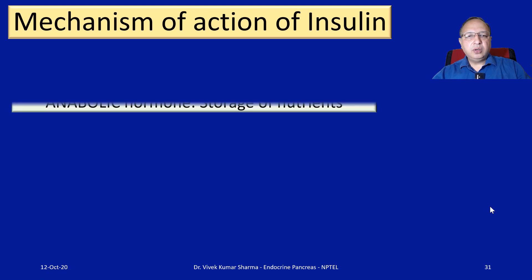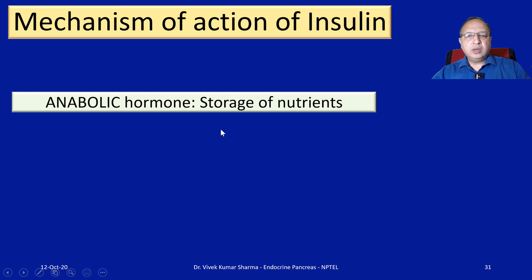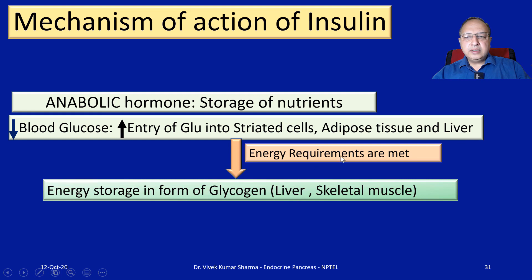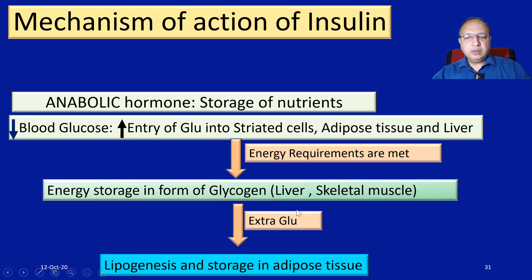The mechanism of action: insulin is an anabolic, also called storage, hormone — it causes storage of nutrients and decreases blood glucose level by increased entry of glucose into striated muscle cells, adipose tissue, and liver. When energy requirements are met and sufficient glucose has entered, excess glucose is stored as glycogen in the liver and skeletal muscle. If glycogen storage is overwhelmed, the excess glucose is converted into other storage forms — promoting lipogenesis and storage in the adipose tissue for long-term energy storage.